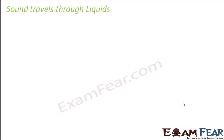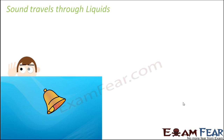Now let us talk about liquids — how sound travels through liquids. To check the propagation of sound through liquids, you can perform this simple experiment. Take any vessel containing water, filled to the surface. Now take a bell deep inside the water — as you can see, the bell is completely under the water — and then you ring the bell. Now if sound travels through water, you should be able to hear the sound when you are at the surface of the water. And yes, you are able to hear the sound of the bell. So that proves that sound travels through liquids.